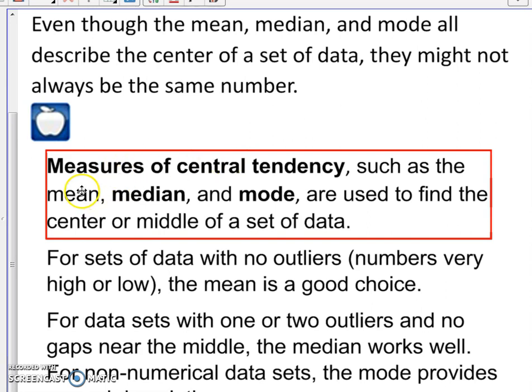Mean, which is the average, median, which is the middle number, and mode, which is the number that repeats the most often.